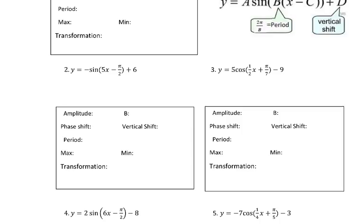Now let's go to the second question. Obviously, it's not already in transformed sine function form. How do we change this into transformed form? Before we directly go to this example, let's do some practice.